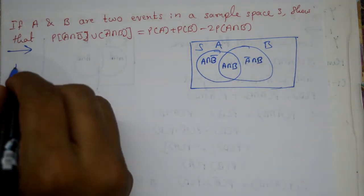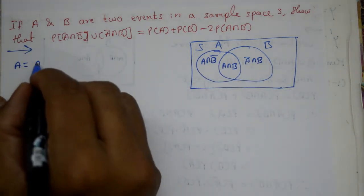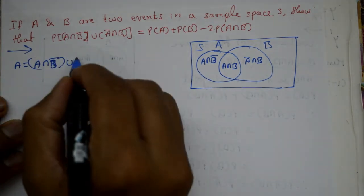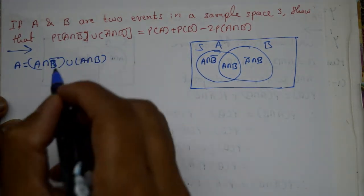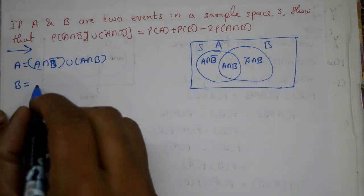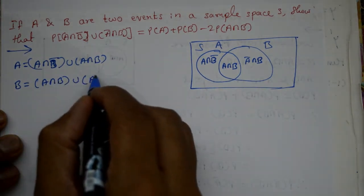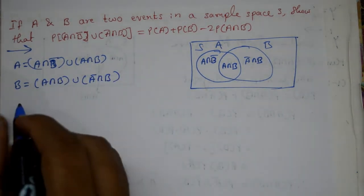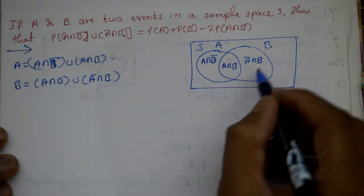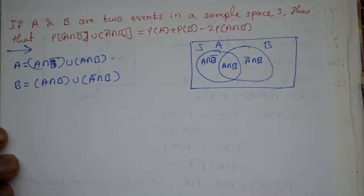Now from the figure, set A ko likhenge is part ko: A equals A intersection B bar union A intersection B. And set B ko liya to: B equals A intersection B union A bar intersection B. Ismei, A intersection B bar, A intersection B and A bar intersection B are mutually disjoint.